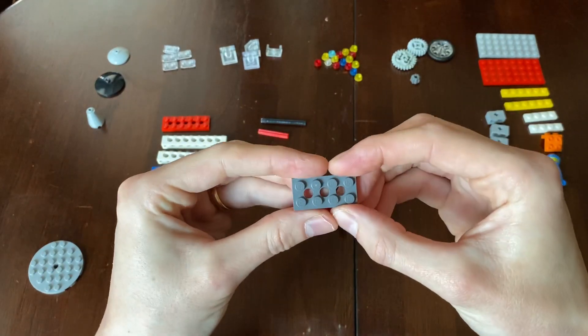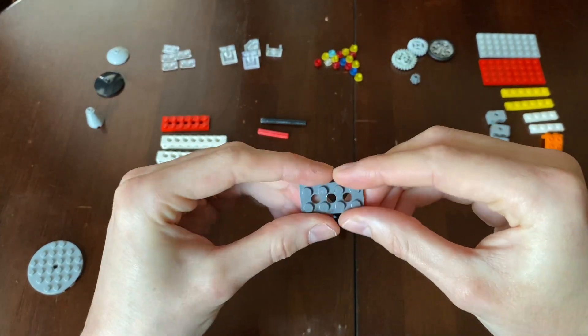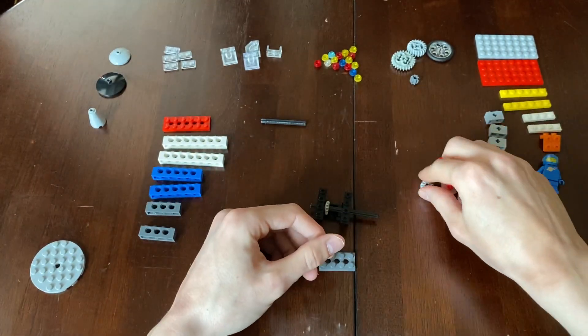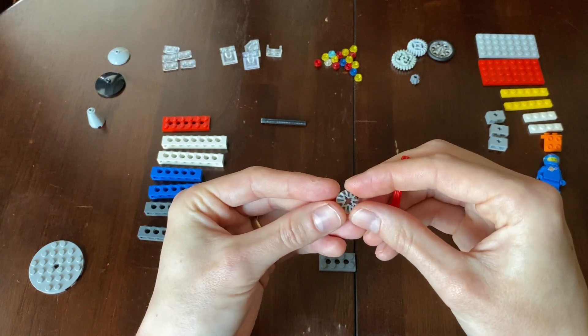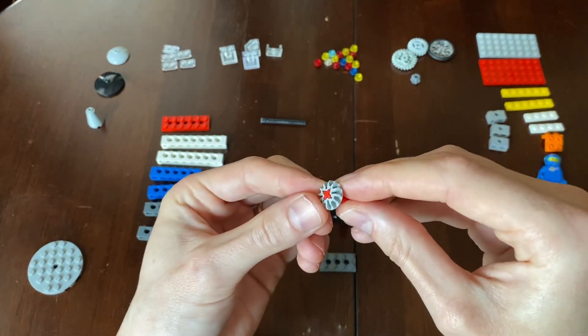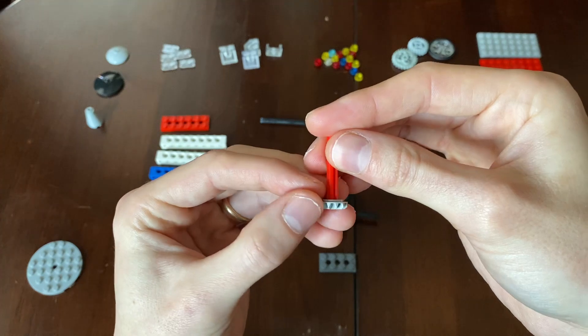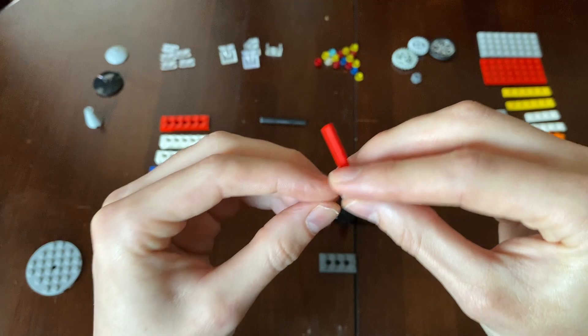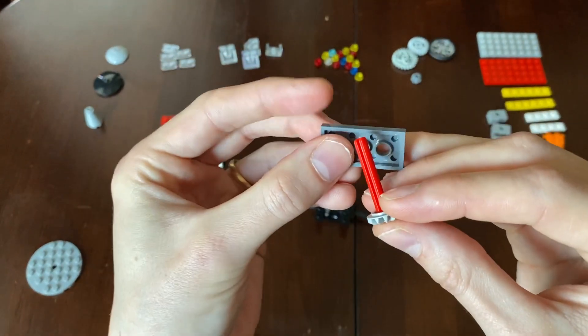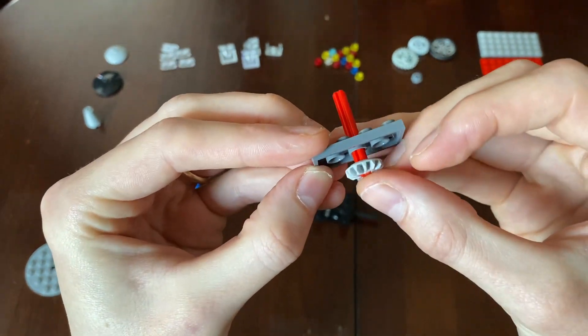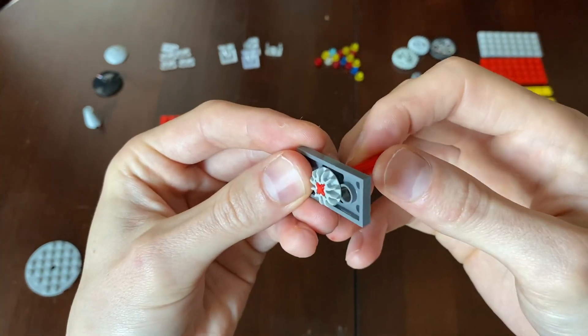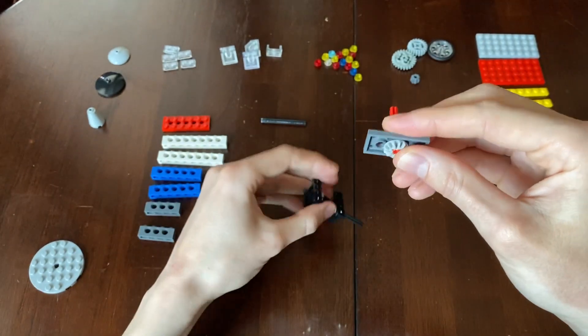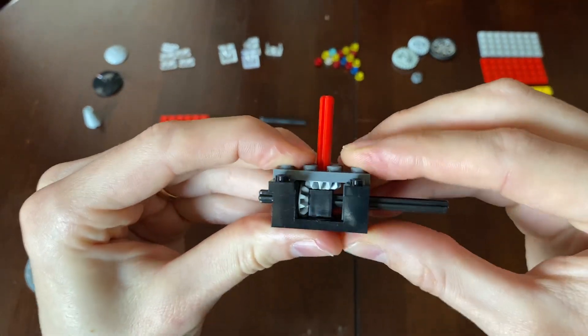Now we're going to take this 4x2 with holes in it. We're going to put that right there. We're going to take this small axle here and this small gear here. What we're going to do is we're going to put this axle in the gear so that the gear's teeth, this is the teeth of the gear right here, they're facing down. We're going to take this axle and put it right through the middle hole in this piece, just like that.